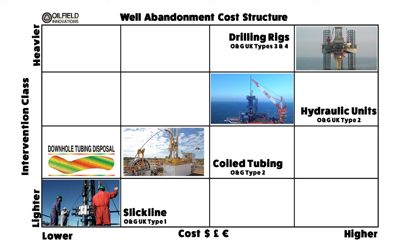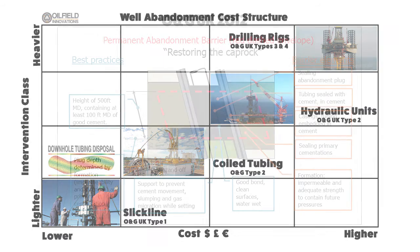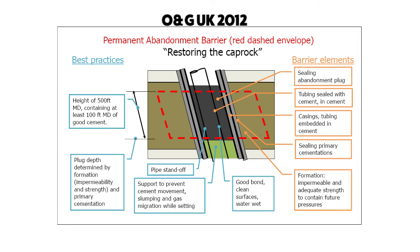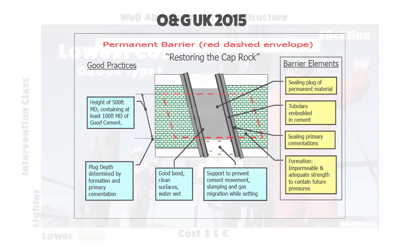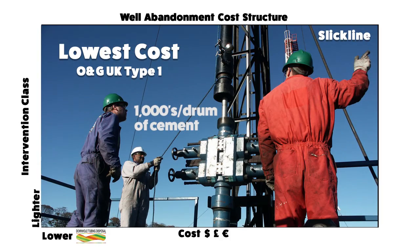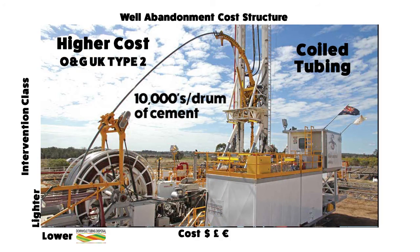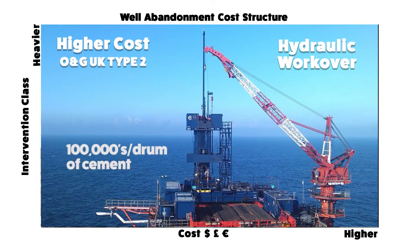The problem is that the industry standard has changed. In the 2012 oil and gas UK guidelines, the tubing can clearly be left within the casing. But in the 2015 oil and gas UK guidelines, the tubing has been removed and it's no longer acceptable to leave it within the casing. This change effectively removes the option to use slickline or coil tubing and pushes all abandonment means towards hydraulic workovers and drilling rigs.